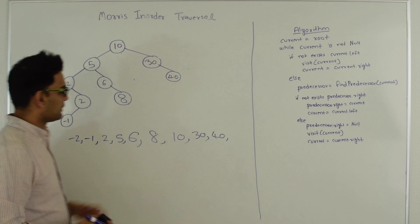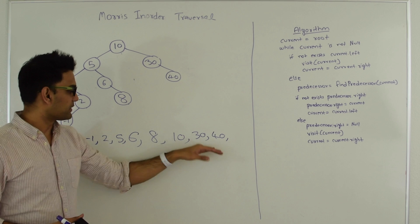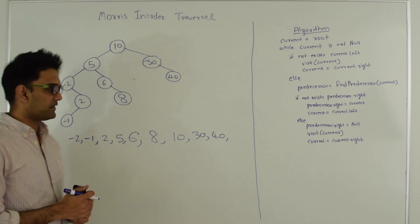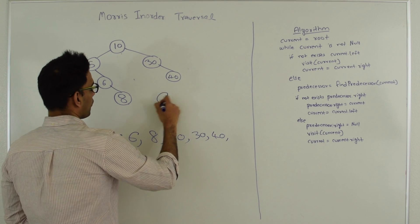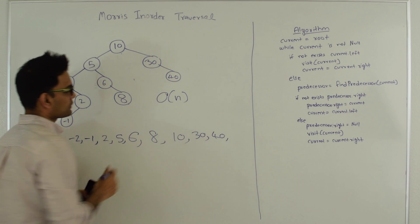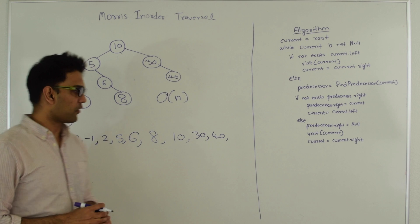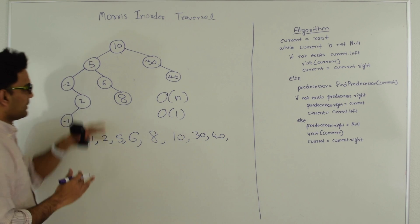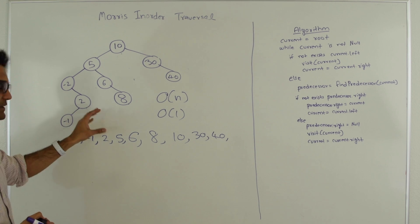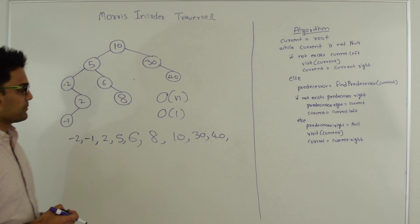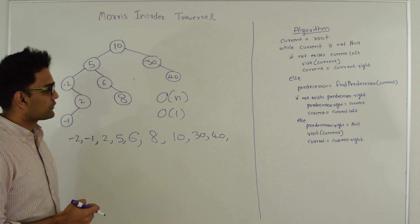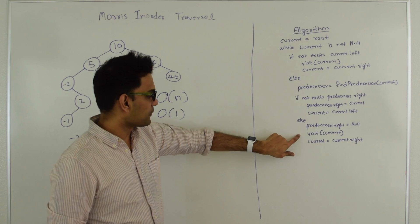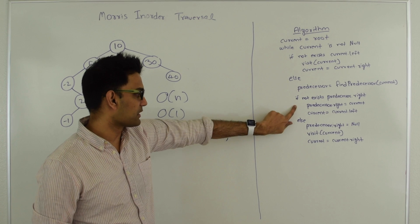The time complexity for this algorithm is O(N). It looks like we're doing a lot more work but it's still in the order of N. The space complexity is O(1) because we are not using any extra space — just changing the tree and then changing it back. Also, if you want to do Morris preorder traversal, all you have to do is visit the current node at a different point in the code.